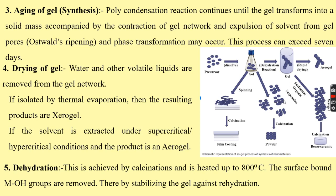This gel network is then subjected to an aging process. The polycondensation reaction continues until the gel transforms into a solid mass, accompanied by contraction of the gel network and expulsion of solvent from the gel pores — what is called the Ostwald ripening process. A phase transformation occurs from gel to a solid form. This process typically takes around seven days.